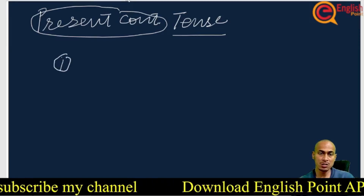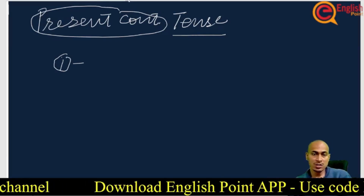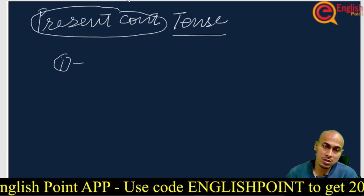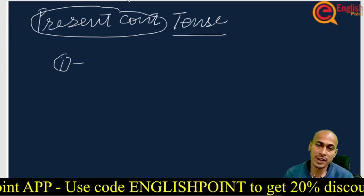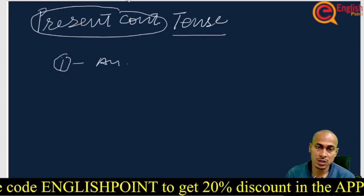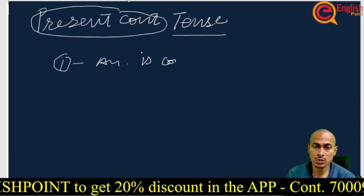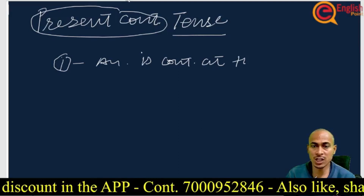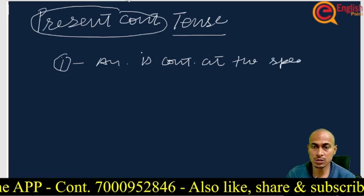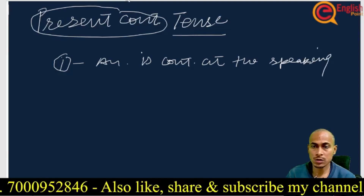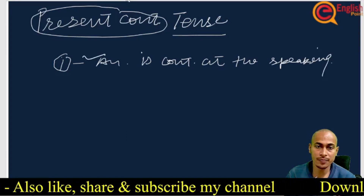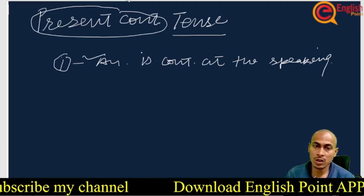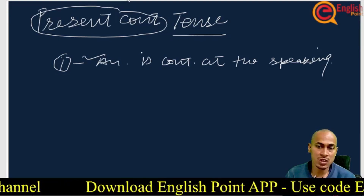The first condition for when present continuous tense is used: when an action is continuing at the time of speaking. You can understand with the sentence that right now I am writing a sentence — that is an action continuing at the time of speaking.